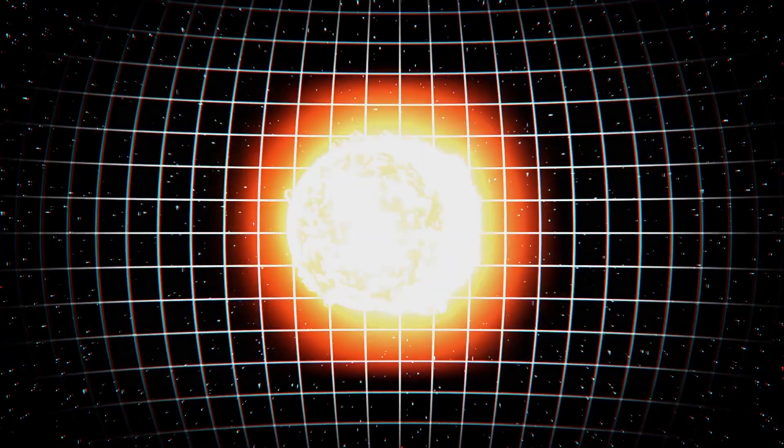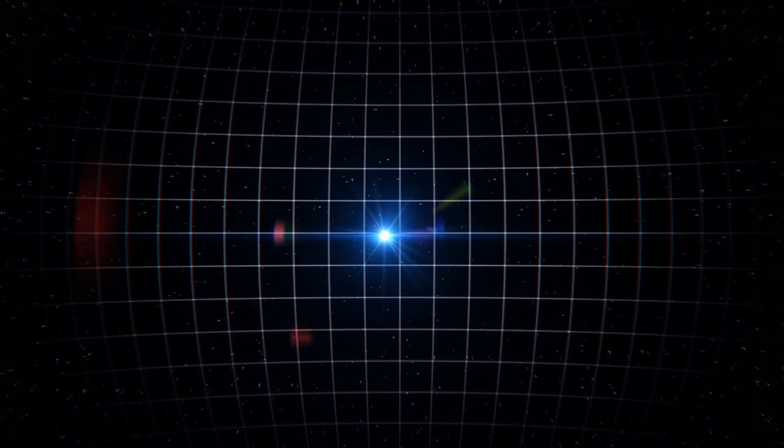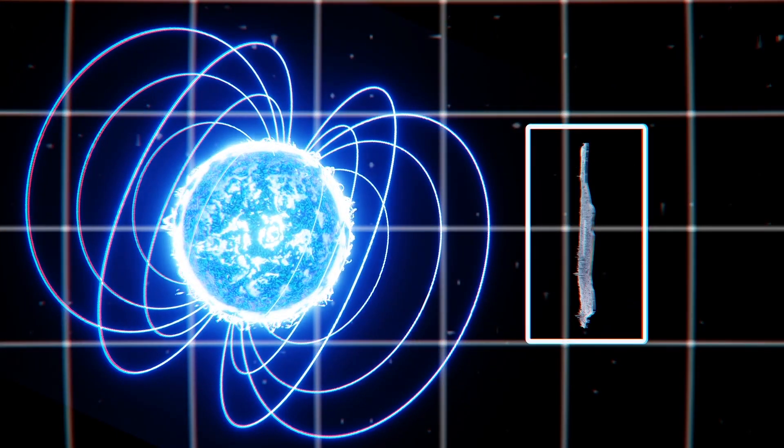As a neutron star, it packs twice the mass of the Sun into a body just 25 kilometers or 15 miles in diameter.